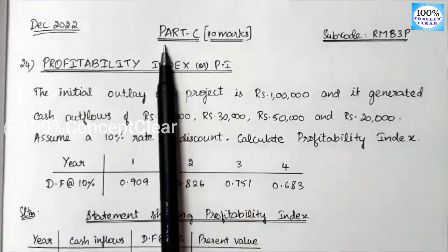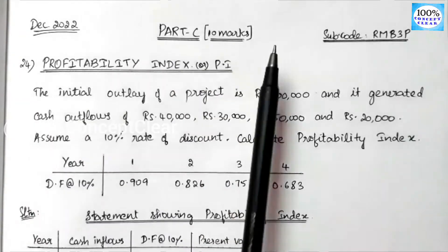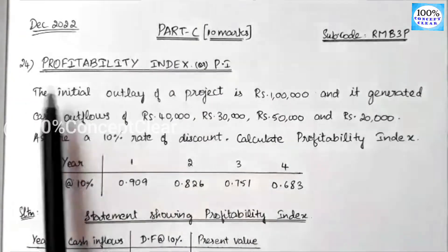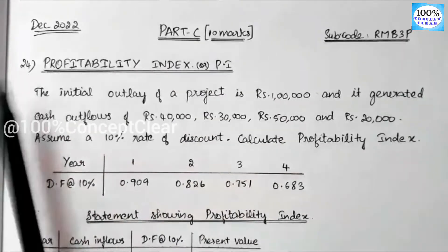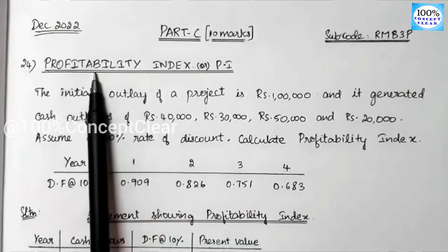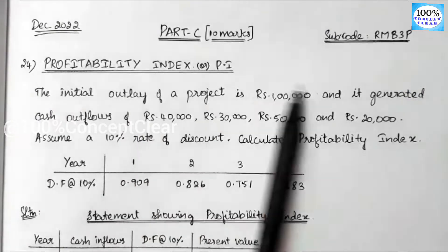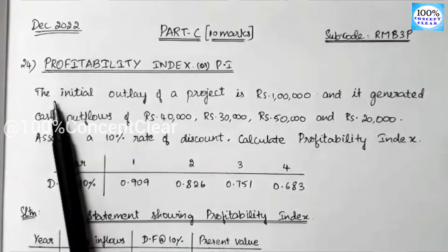We will solve a Part C, 10-mark question from this paper. The question is on the Profitability Index, which is question number 24.